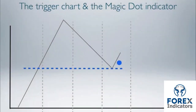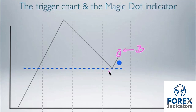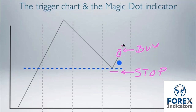To recap: on the 15-minute time frame, we wait for the dot to appear after a bounce of a key level. Then we wait for that candle to close. Once it closes, we click buy or sell, and place our stop loss two to three pips below or above the tip of the bounce. As for the target, that's a little more involved, so I'll leave that for the next video. I'll be waiting for you there — cheers.